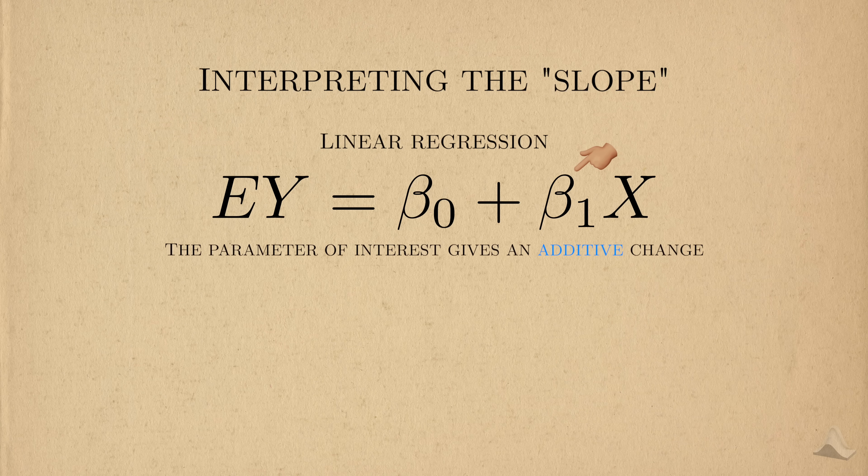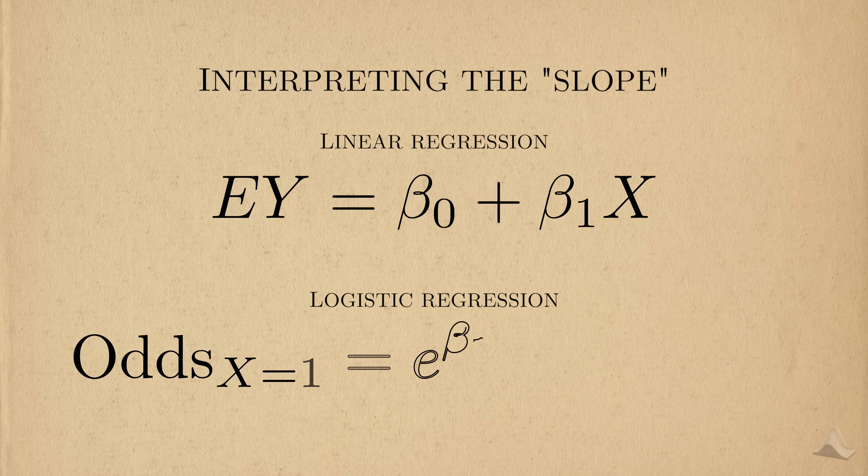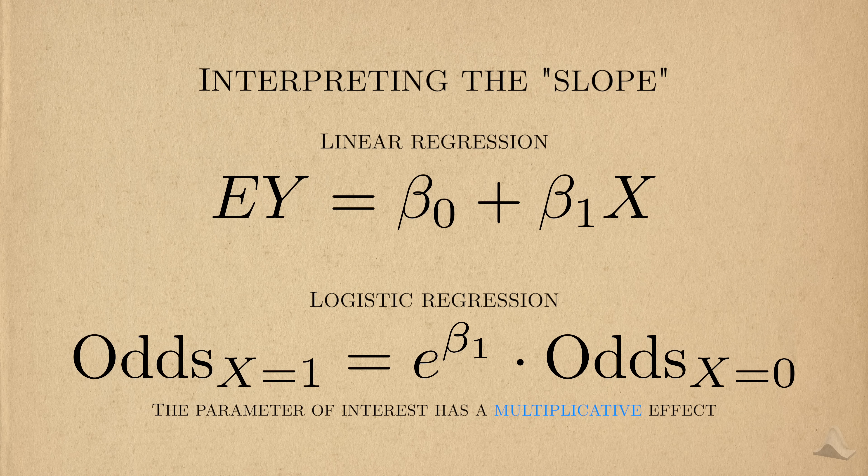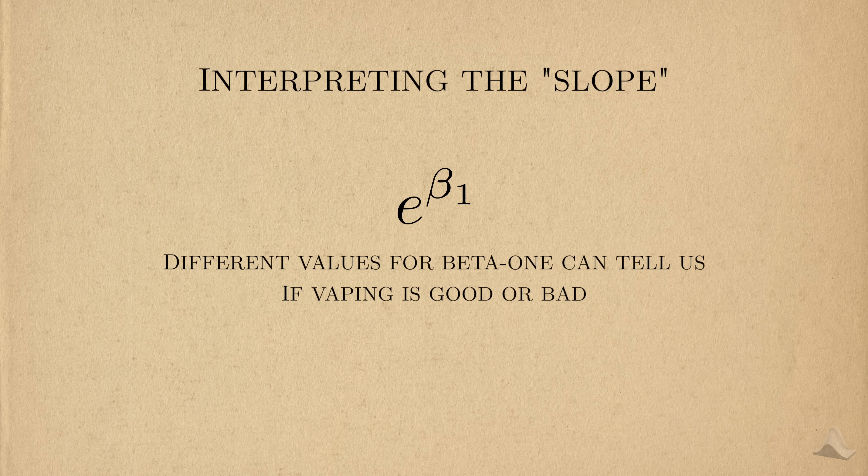In linear regression, beta 1 represents the additive change to the average outcome. But in logistic regression, we have a multiplicative change. Same idea, slightly different interpretation.